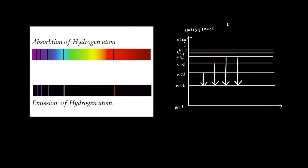When the electron transitions from n=3 to n=2, the energy it releases corresponds to the wavelength of red light. The transition from n=4 to n=2 corresponds to blue-green light. For n=5 to n=2, that is indigo light. And the transition from n=6 to n=2 involves the release of energy corresponding to the wavelength of violet light.